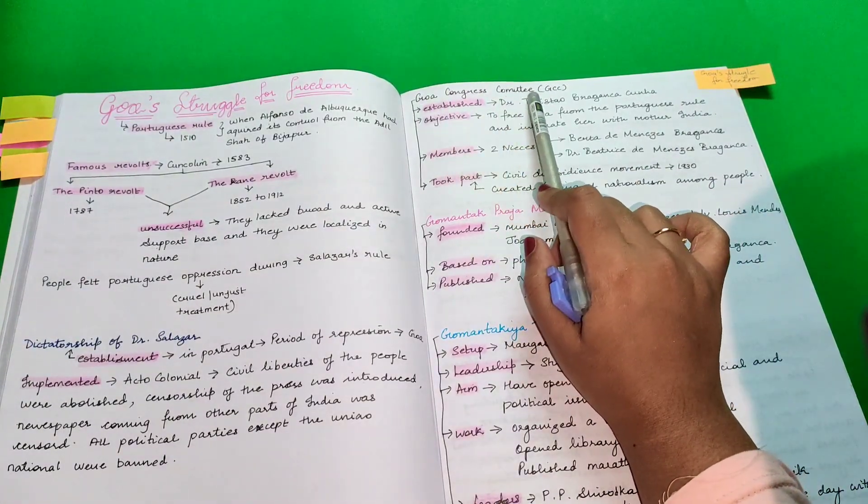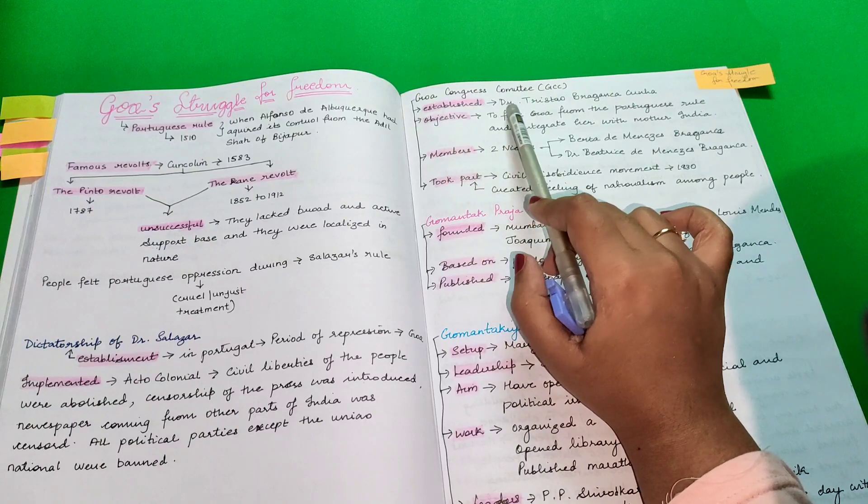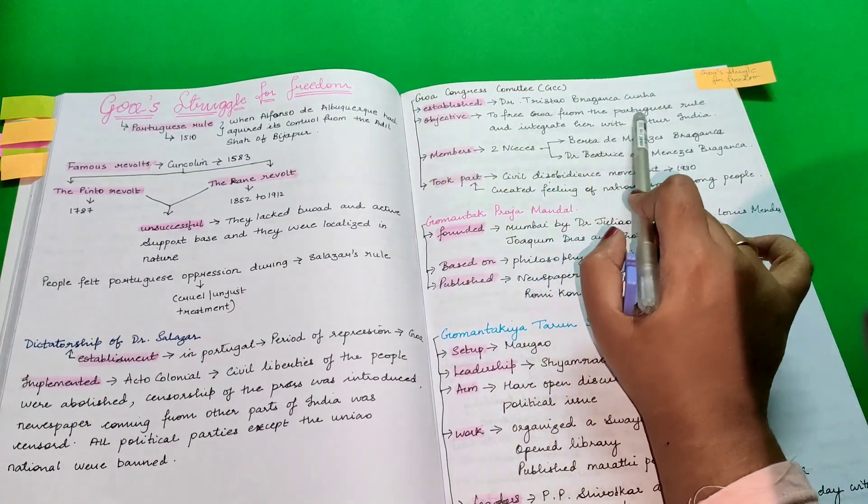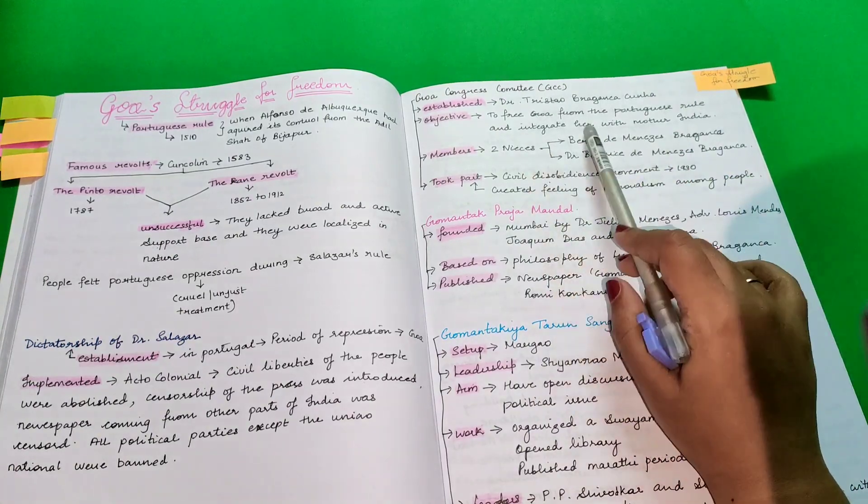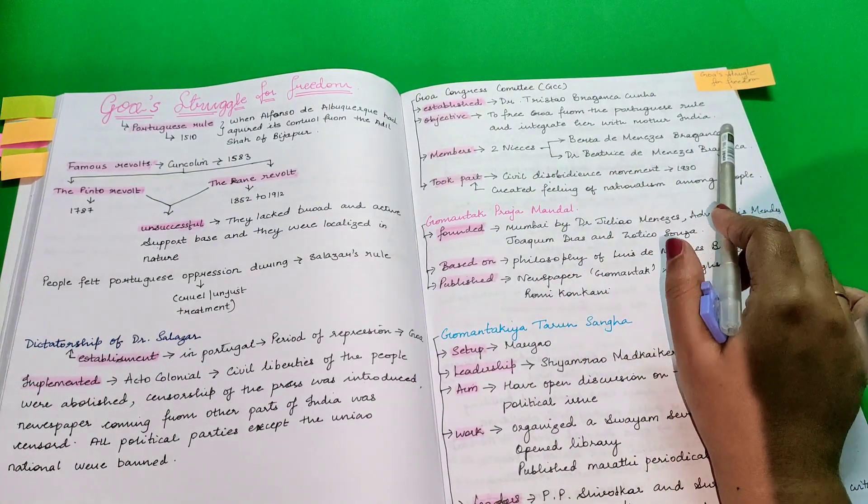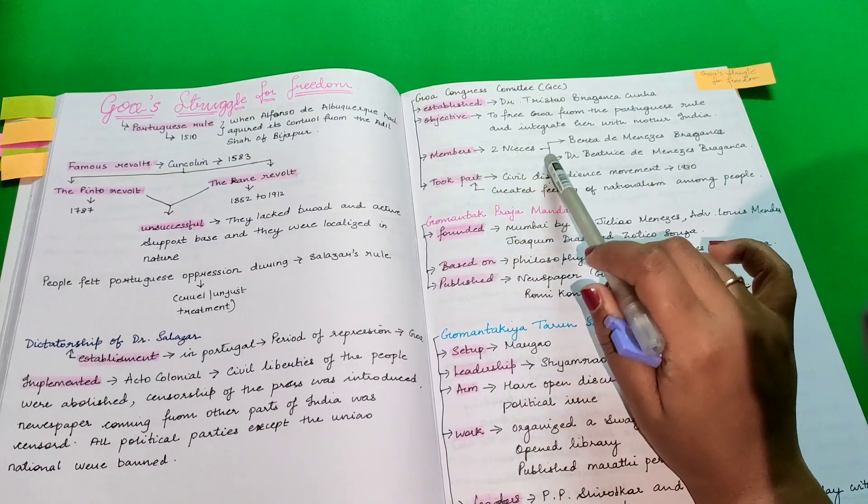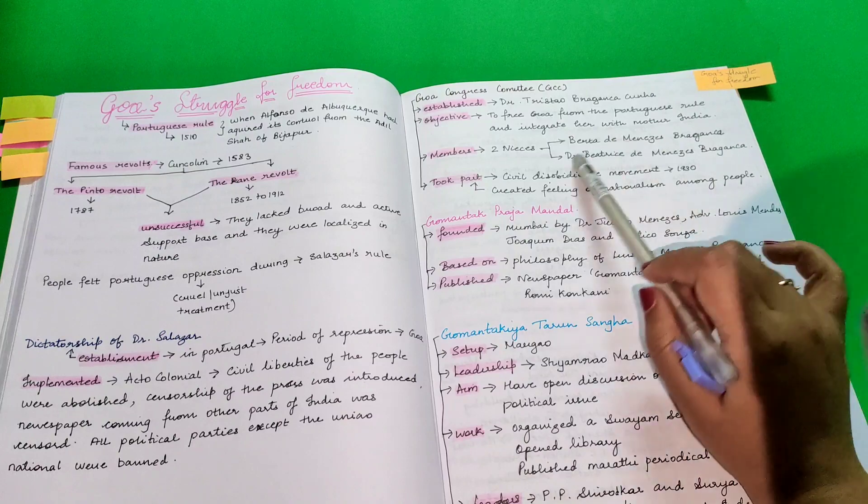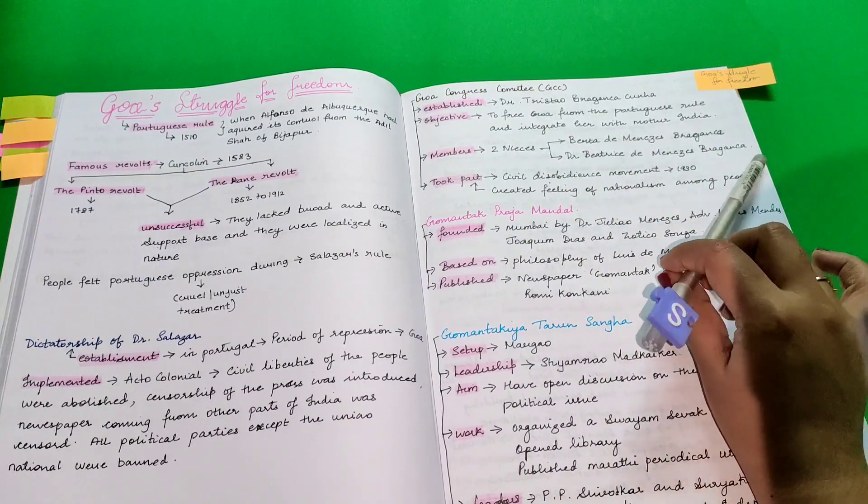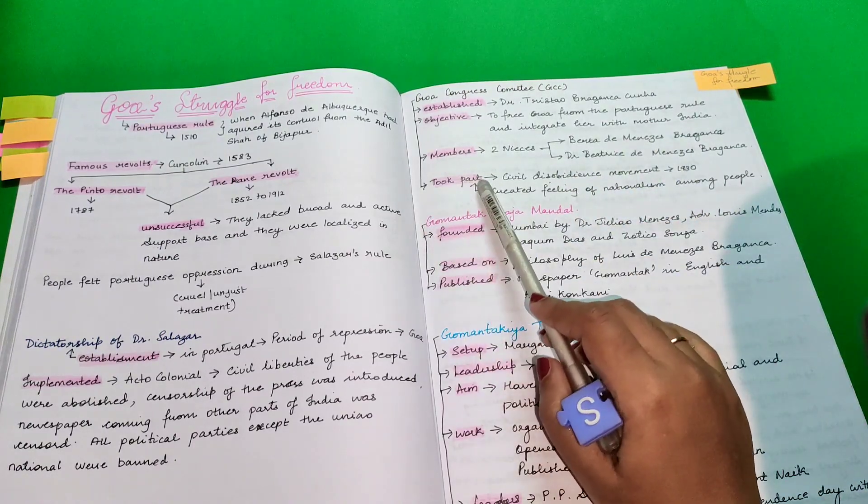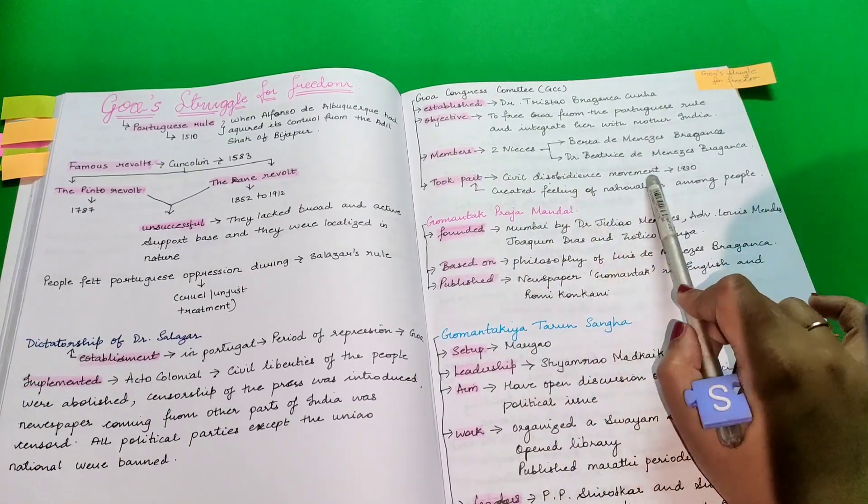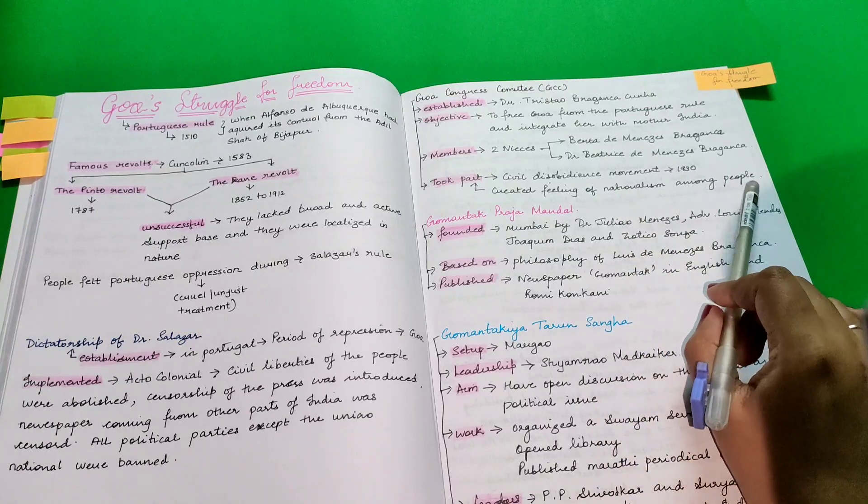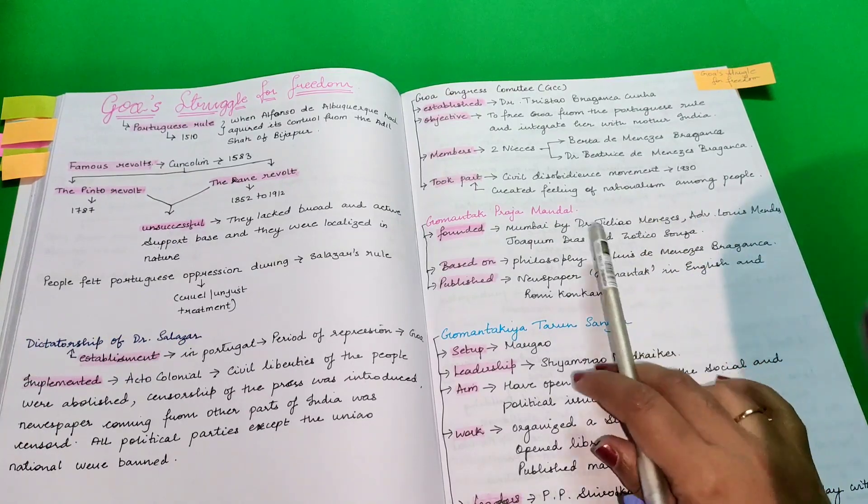Goa Congress Committee was established by Dr. Tristau Braganza Kunna. Objective was to free Goa from the Portuguese rule and integrate her with Mother India. Other two members were his two nieces that joined him later, Berta de Menezes Braganza and Dr. Julissa de Menezes Braganza. They took part in the civil disobedience movement in 1930 and that created a feeling of nationalism among people.